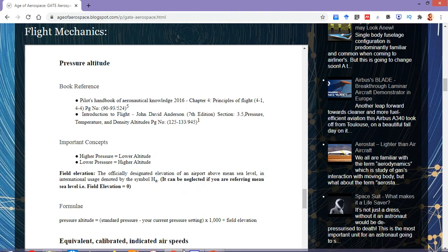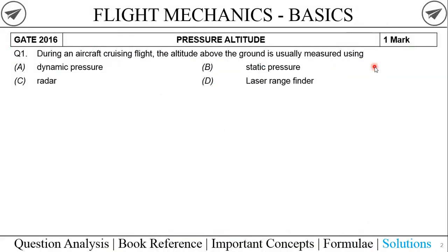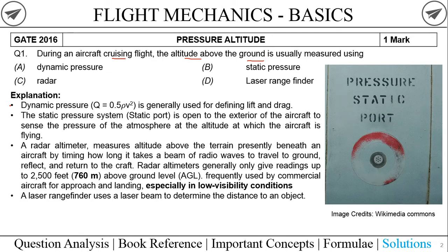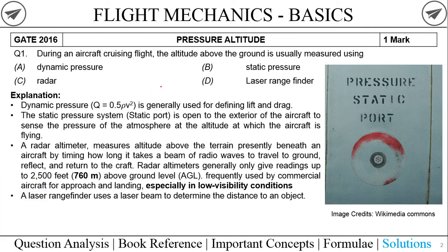Now let's solve the question — a one-mark question from GATE 2016. The question asks: during an aircraft's cruising flight, the altitude above the ground is usually measured by using — and gives four options. Regarding Option A, dynamic pressure (half rho V squared) is used in defining lift and drag, for example in the lift equation L = ½ρV²SC_L. Dynamic pressure does not relate to altitude, so we can strike out Option A.